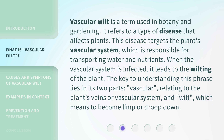Vascular Wilt is a term used in botany and gardening. It refers to a type of disease that affects plants. This disease targets the plant's vascular system, which is responsible for transporting water and nutrients. When the vascular system is infected, it leads to the wilting of the plant. The key to understanding this phrase lies in its two parts: vascular, relating to the plant's veins or vascular system, and wilt, which means to become limp or droop down.